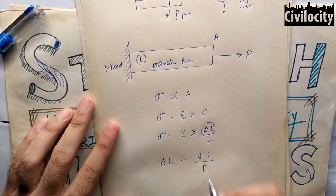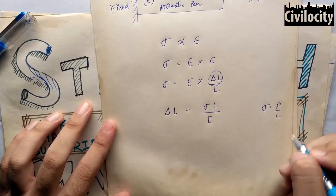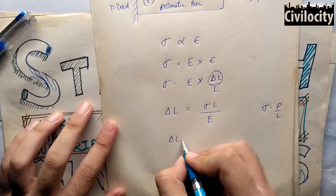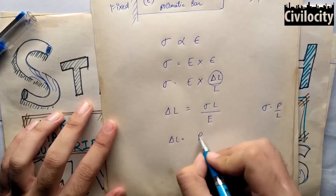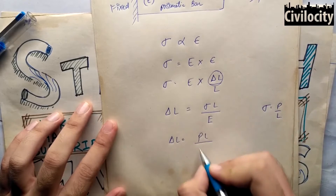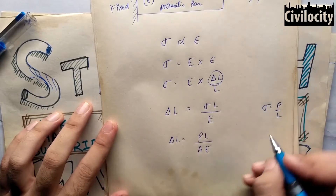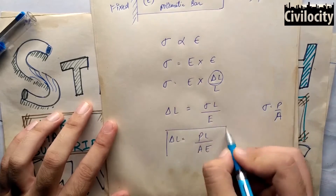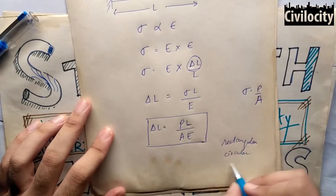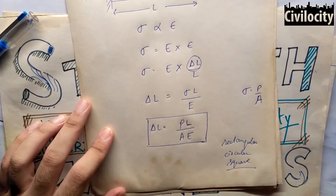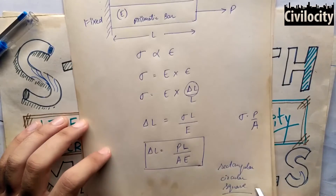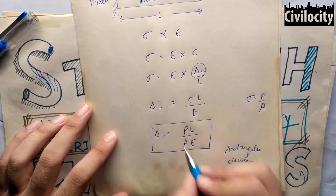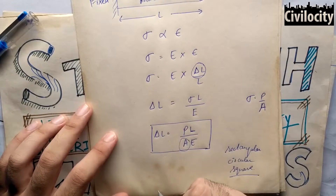Now you know the stress formula: stress equals force upon area. Here force is our load P and A is the area. So the deflection delta L will be equal to PL upon AE, which is the formula for deflection in prismatic members — for example rectangular, circular, square or any prismatic bar. You just have to change the formula for area and you can find out the deflection in different shapes.